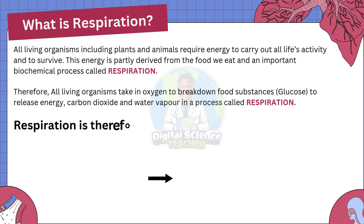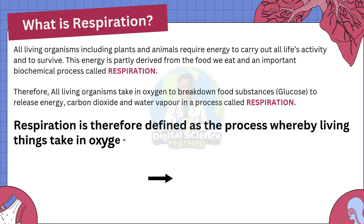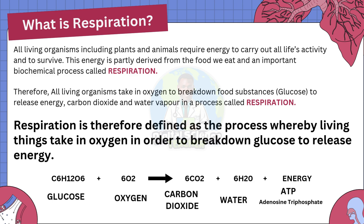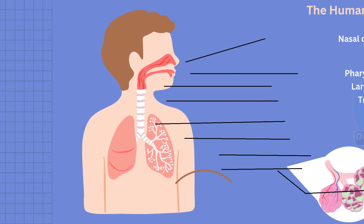Respiration is defined as the process whereby living things take in oxygen in order to break down glucose to release energy. A simple chemical equation for respiration is: glucose plus 6 molecules of oxygen producing 6 molecules of carbon dioxide, 6 molecules of water vapor, and energy, which is stored in the form of ATP. The full meaning of ATP is adenosine triphosphate.